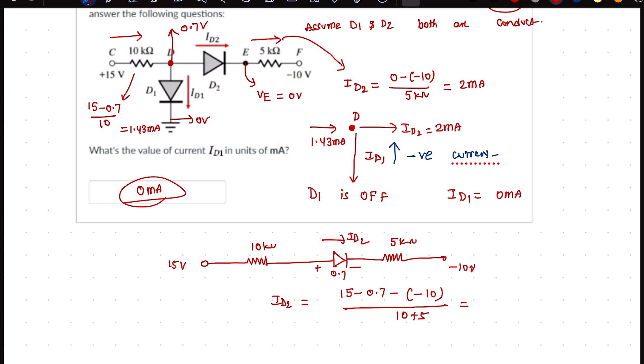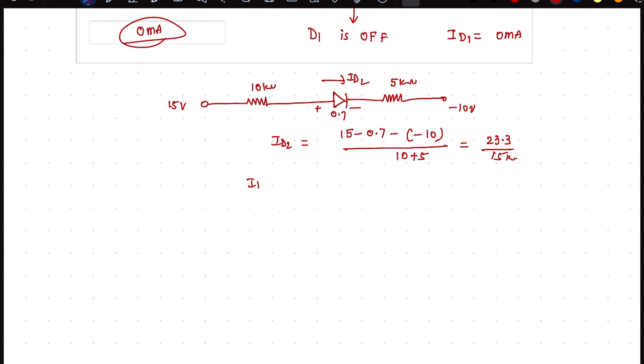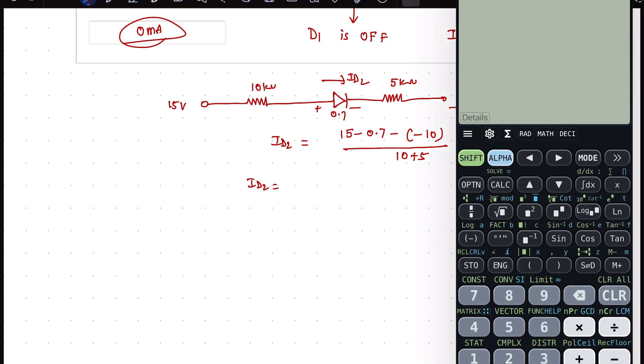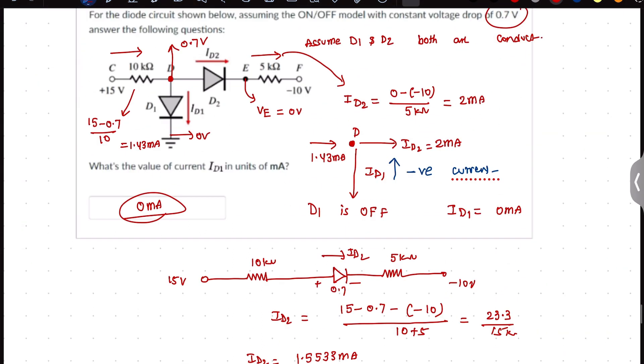Clearly this leads to 23.3 / 15 kilohms, so ID2 must be... let's use a calculator. 23.3 / 15, so it is 1.5533 milliamperes.